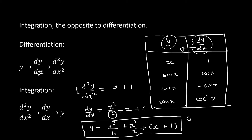This is called the general solution. If they want you to find the particular solution, they will give you values to help you calculate c and d — then that will be your particular solution. Okay, let's get started.